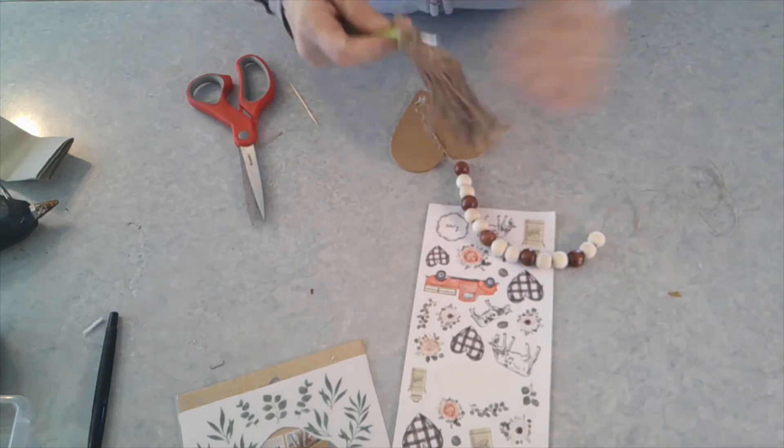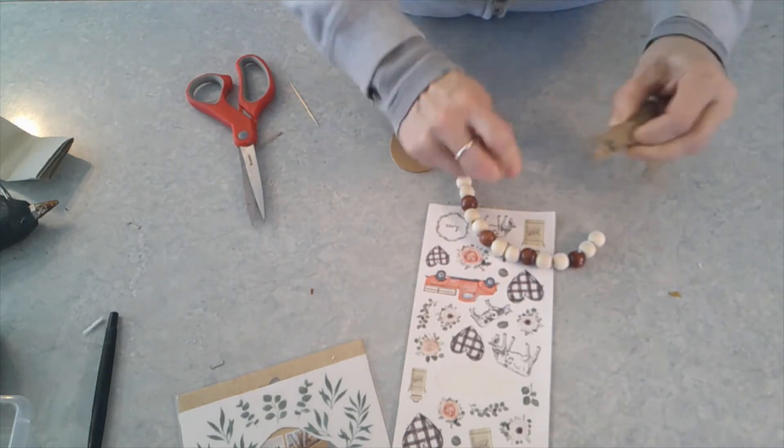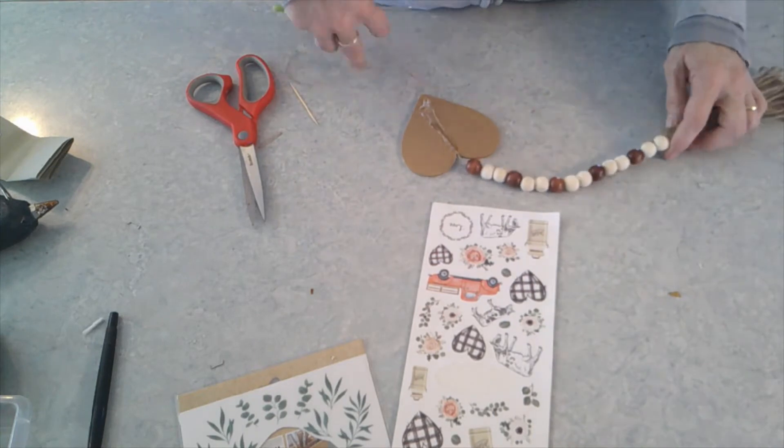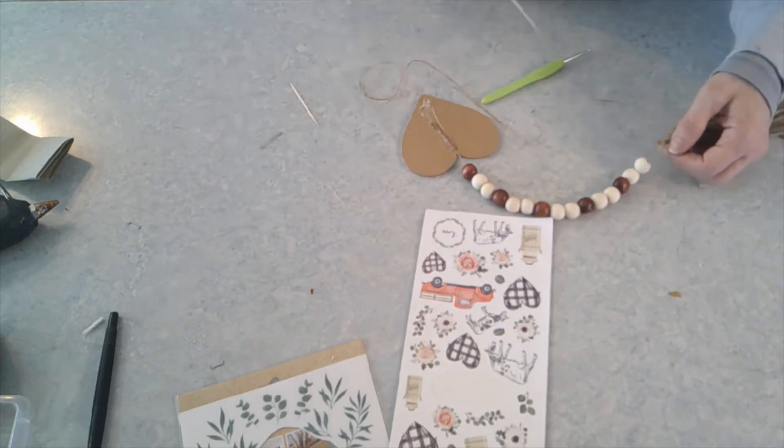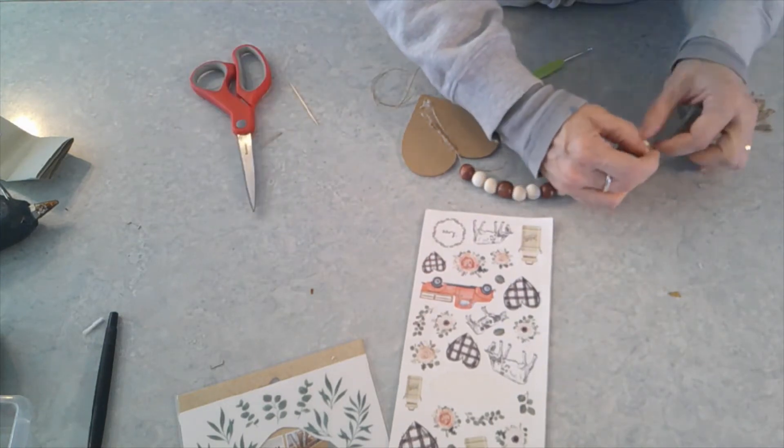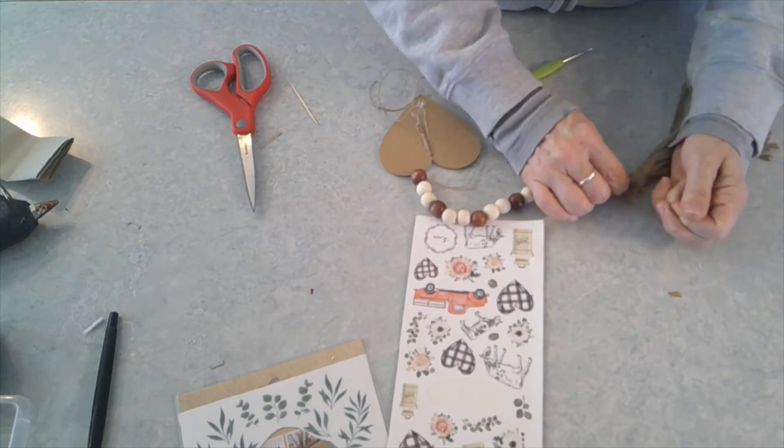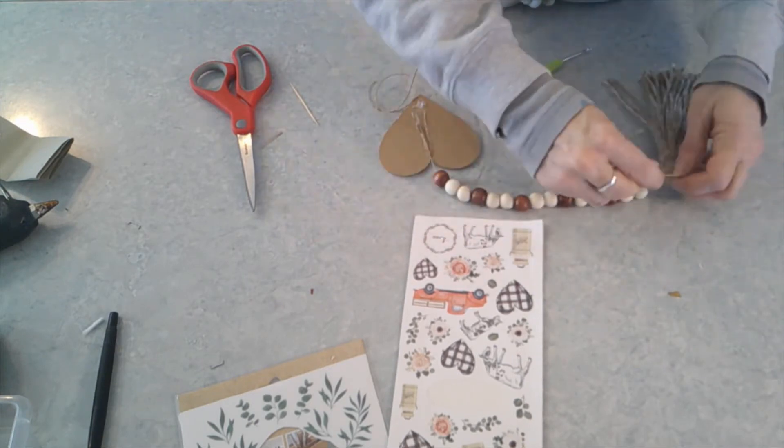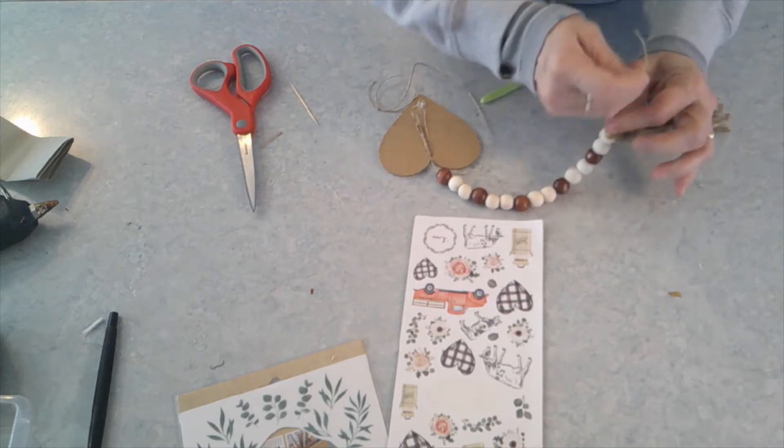I wanted a tassel on one end of my garland so I used this jute one. I had made it for a planter at one time and I didn't use it. If this is something you're interested in, let me know. I can show you how to put it together. I used a crochet hook and I pulled the jute through the end and tied it off.